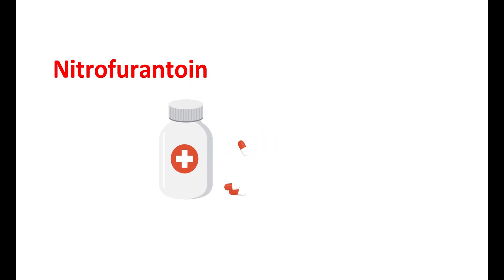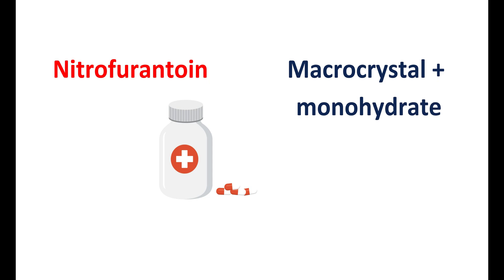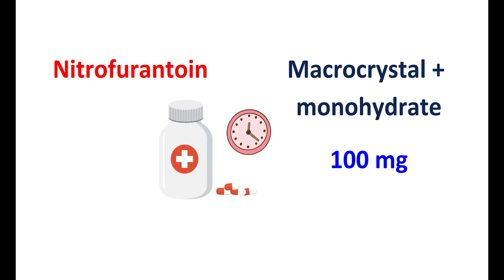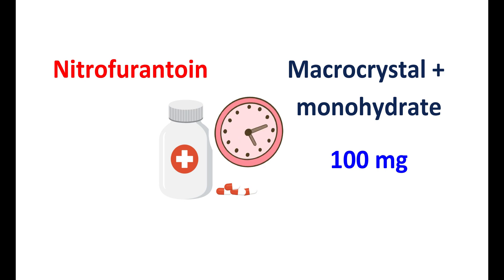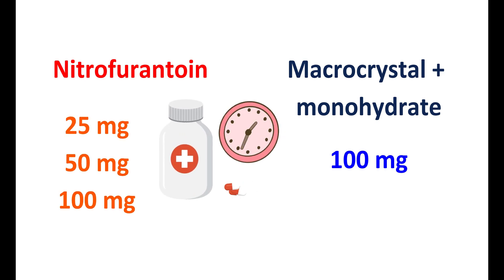Now let us see the doses of Nitrofurantoin. Nitrofurantoin is available as macrocrystals in the form of capsules, and also as a combination of macrocrystals and monohydrate form, where this capsule is available at a strength of 100 mg. It is also available as an oral suspension as Furadantin. As macrocrystals, it is available at three strengths: 25 mg, 50 mg, and 100 mg.